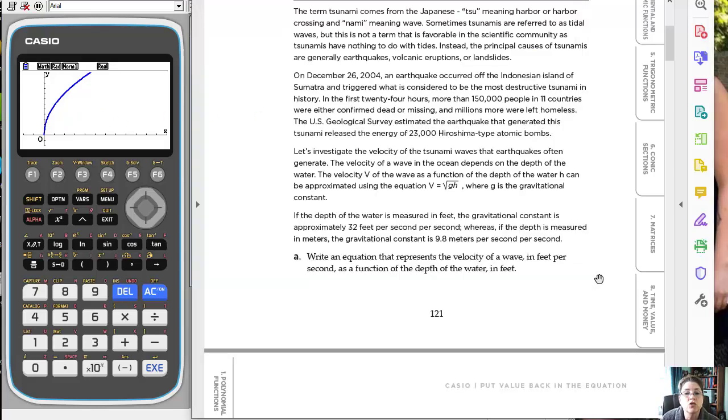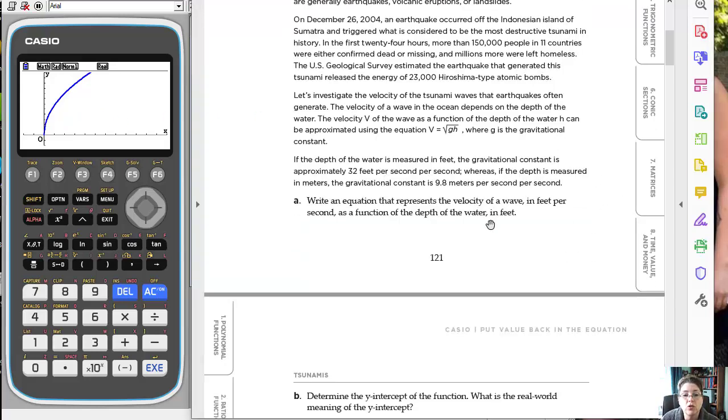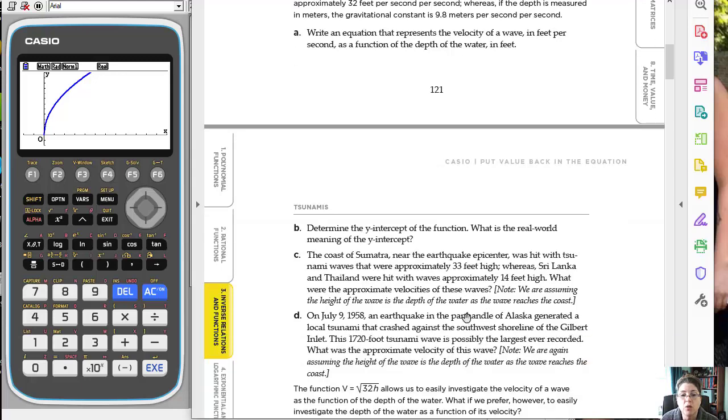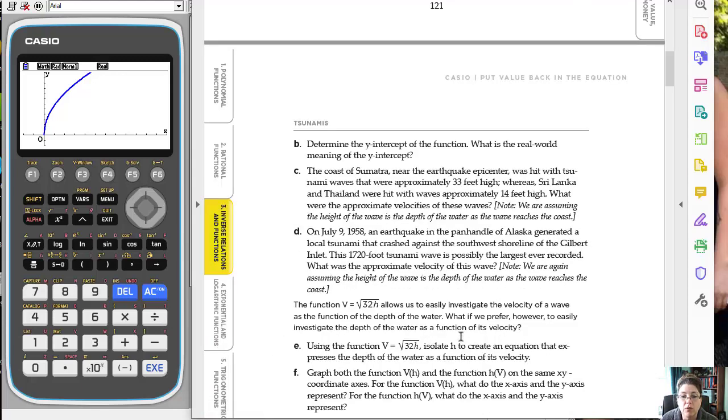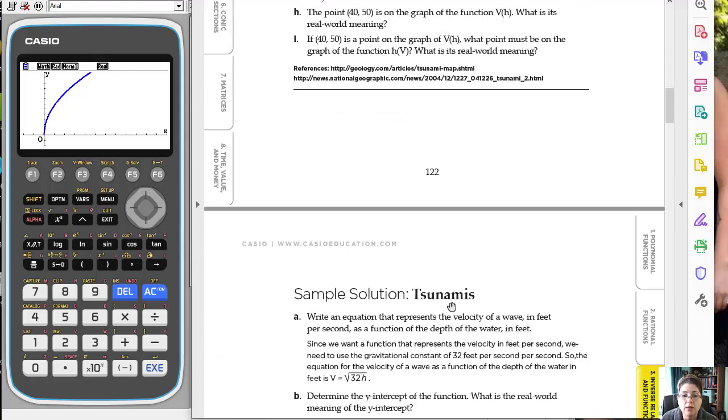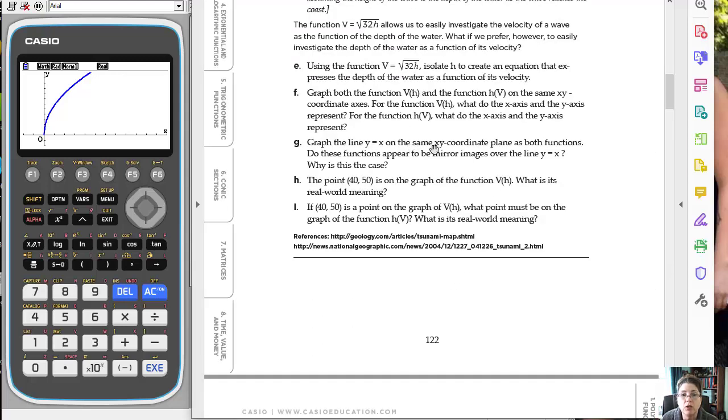Notice it's just the positives because it's a square root, right? So that's the function and they're going to use that function to answer some questions like what's the y intercept? What does that mean in the context of the situation? So they're going to be doing a lot of those types of things. And then as we get down to the last part, they're going to say, well, can you make the inverse function of that?